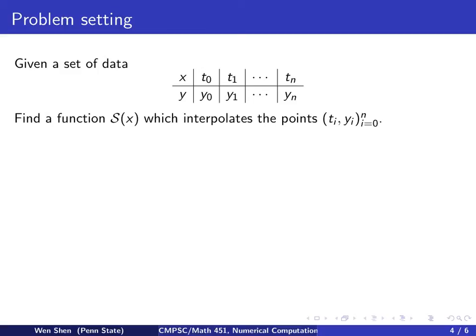We want to find a function S(x) which interpolates the data points (tᵢ, yᵢ) for all i. Some terminology: these t values, which form a set of ordered numbers t₀ < t₁ < t₂ < ... < tₙ, are called knots.